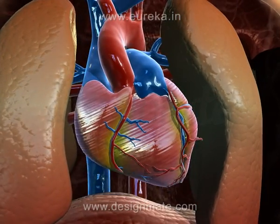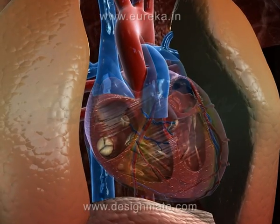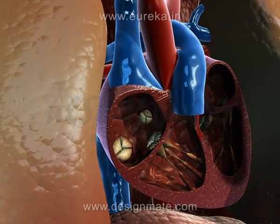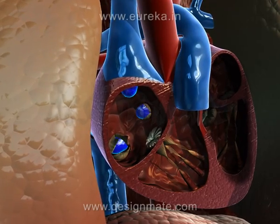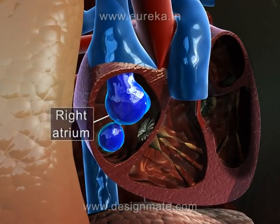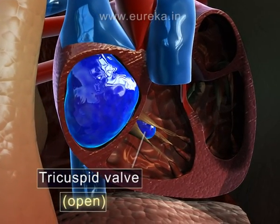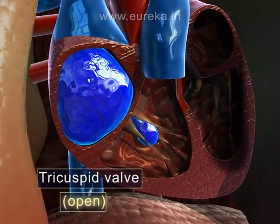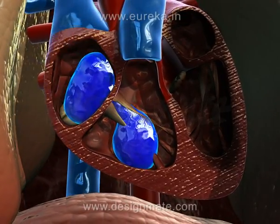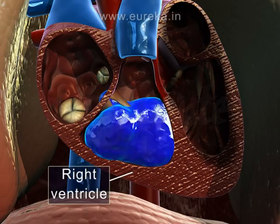The heart is a complex pumping organ. If we look at a section of the heart, we observe that it receives deoxygenated blood from different parts of the body in its right atrium. The tricuspid valve opens and blood keeps flowing into the right ventricle. Then the right atrium contracts, pushing the remaining blood into the right ventricle.